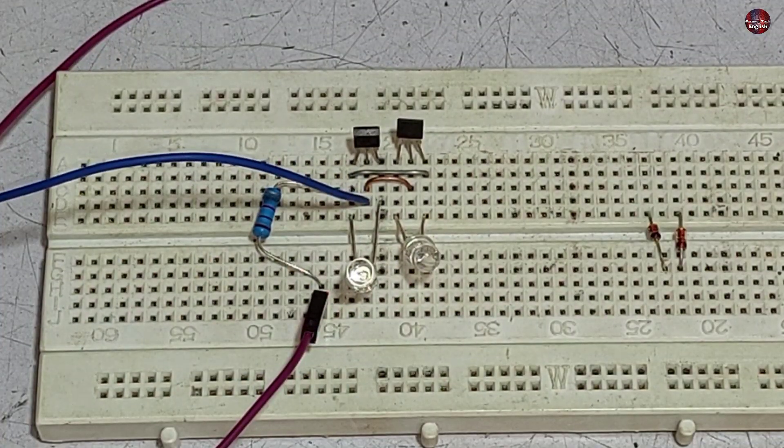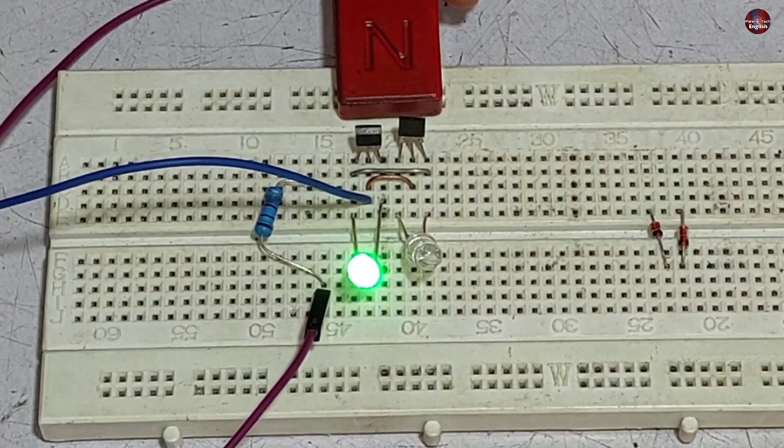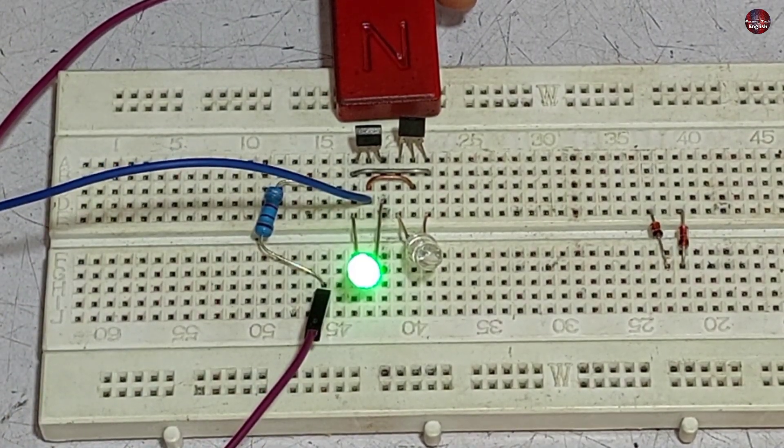First, I am bringing the north pole near the hall sensors. The green light has glowed. As both the sensors are attached in reverse.